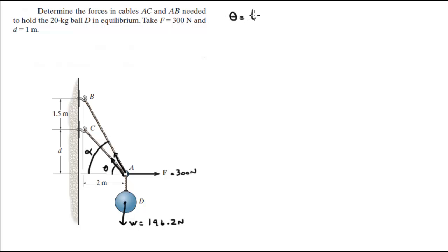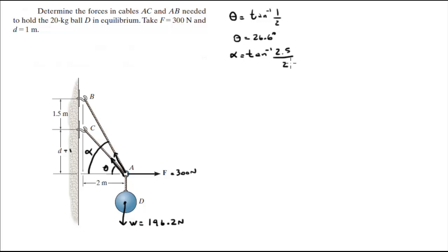Theta is equal to the tangent inverse of 1 over 2, because D is equal to 1. So theta is equal to 26.6 degrees. Alpha is equal to the tangent inverse of 2.5 over 2, because 1.5 plus 1 is equal to 2.5 over 2. Alpha is equal to 51.3 degrees.